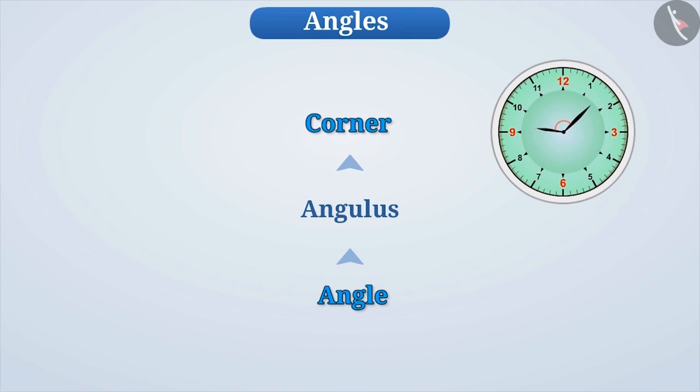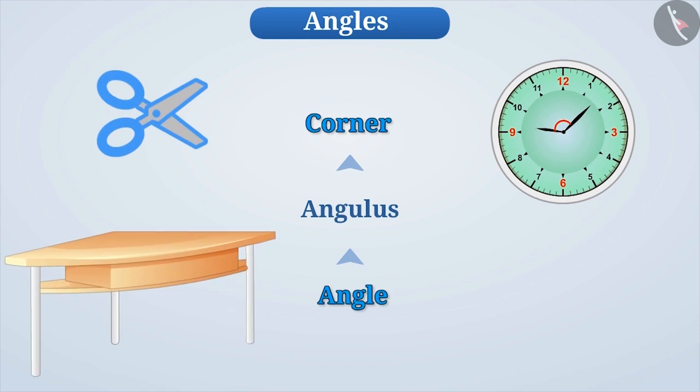Like the hands of a clock form a corner, we say that the hands of a clock are making an angle. In this way, we see angles in many objects around us, such as the blades of a scissors together make an angle, the corner of a table make an angle, etc.